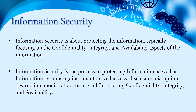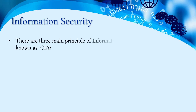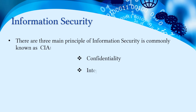Information security is a process of protecting information and information systems against unauthorized access, disclosure, disruption, destruction, modification, or use, while ensuring confidentiality, integrity, and availability. All information security professionals and companies work towards the CIA triad — C is confidentiality, I is integrity, and A is availability — to secure the information of an organization.